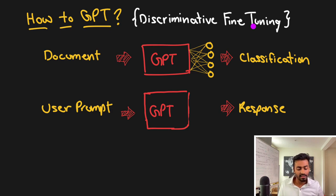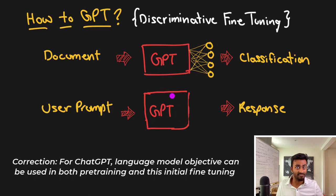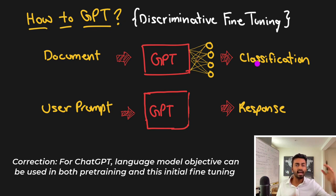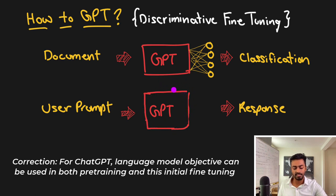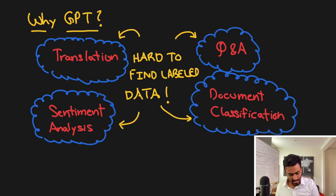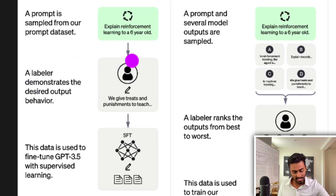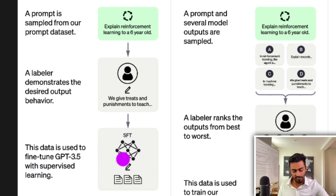With ChatGPT, the input is a user prompt and the output is a response — which is already the format in which GPT architectures operate. We don't even need to add new parameters as in document classification; we just get extra examples of user prompts and their corresponding responses to further fine-tune the model. This is exactly what we see in step one of ChatGPT: the labeler demonstrates the desired output behavior and fine-tunes via supervised learning.